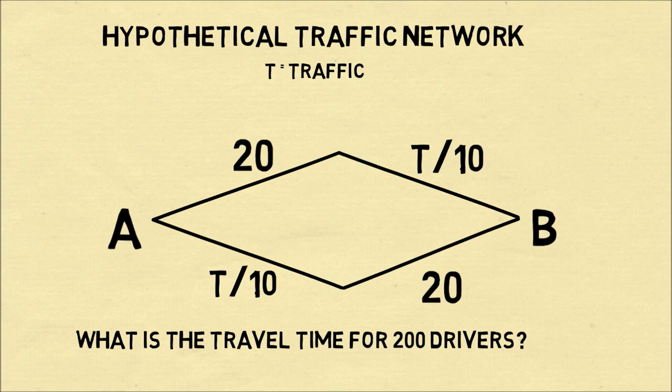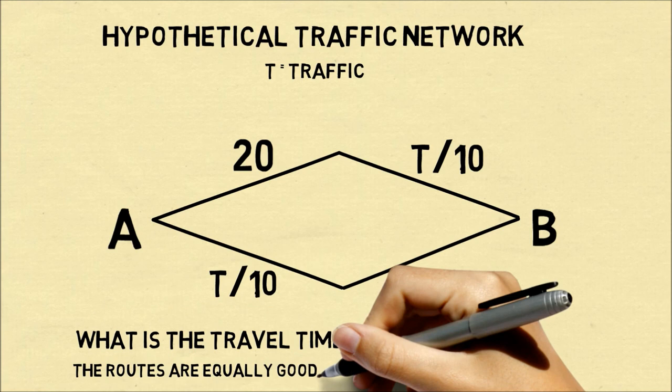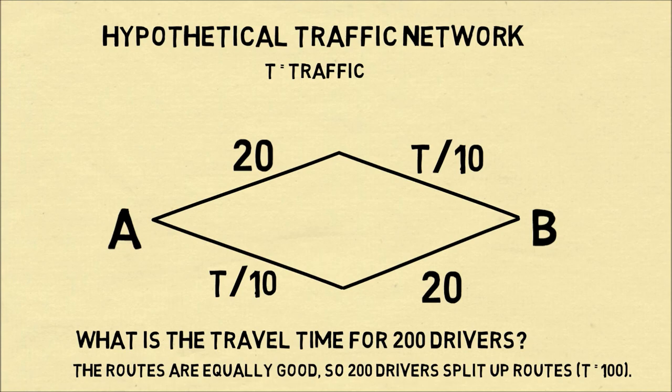We can ask, how long would it take for 200 drivers to go along this network? It's pretty easy to see the roads are equally preferable, so the 200 drivers would split up, T equals 100 to each route.